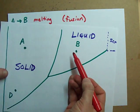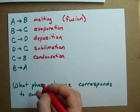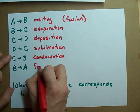B to A in this case. B is in the liquid zone. A is in the solid zone. A liquid turning into a solid is called freezing.